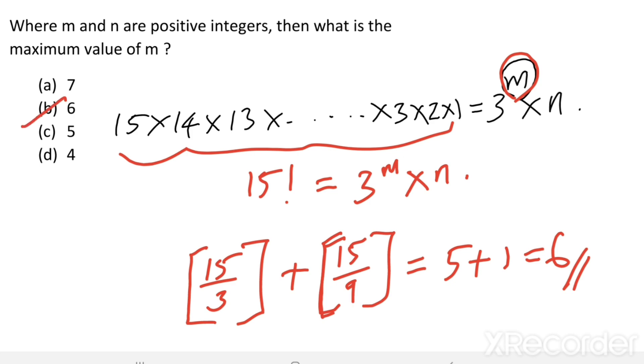Alternatively, we can find this by counting. 15 = 3×5, so we have one 3. Then 12 = 3×4, so we get another 3.